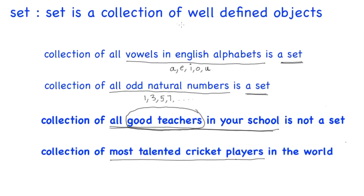A set is all about a collection of well-defined objects. Whatever the collection, if it is well-defined, we say that it is a set; otherwise it is not a set. I hope you understand the definition of a set.